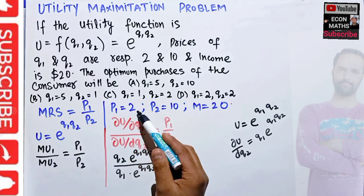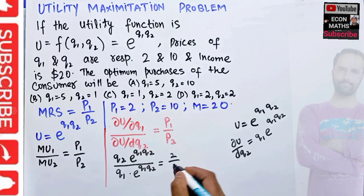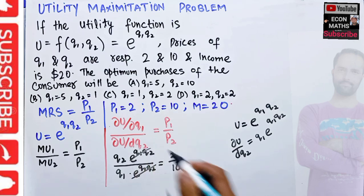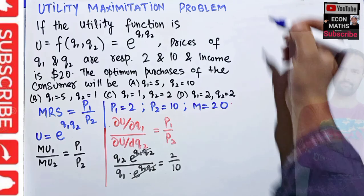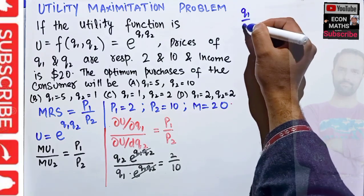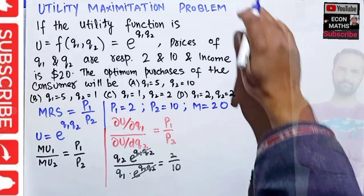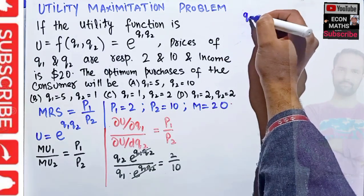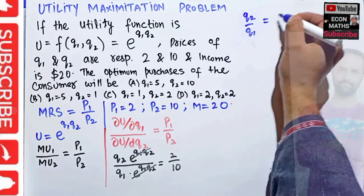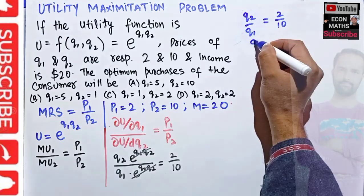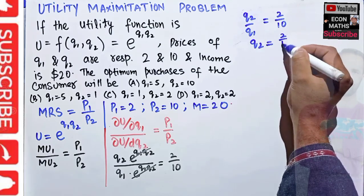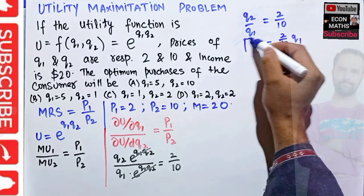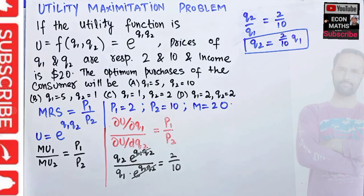Setting MRS equal to the price ratio: [q2 * e^(q1*q2)] / [q1 * e^(q1*q2)] = p1/p2 = 2/10. The exponential terms cancel, giving us q2/q1 = 2/10, which means q2 = (2/10) * q1.